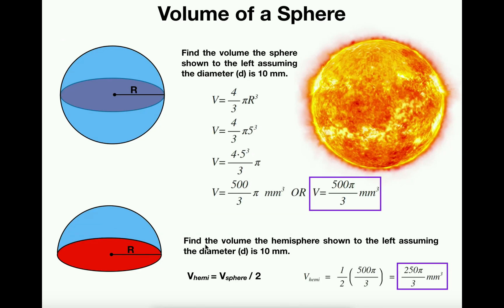For this part of the problem we're going to find the volume of the hemisphere shown to the left, assuming the diameter is still 10 millimeters. Now the best way to go about doing this for basic geometry purposes is don't think of it as a hemisphere at first. Consider it as a whole sphere.